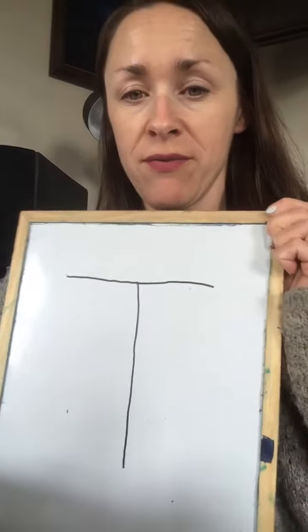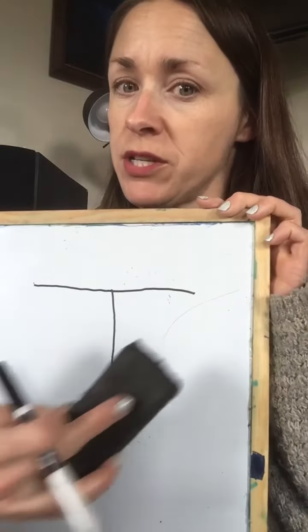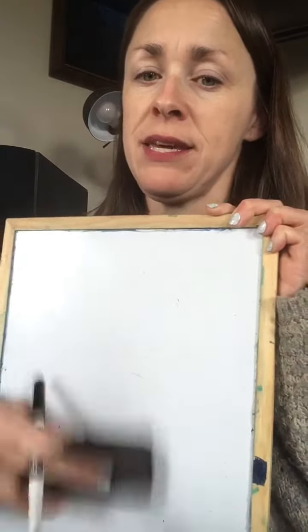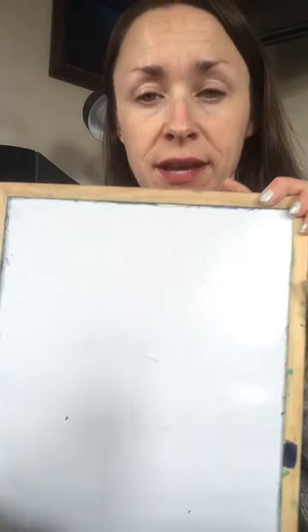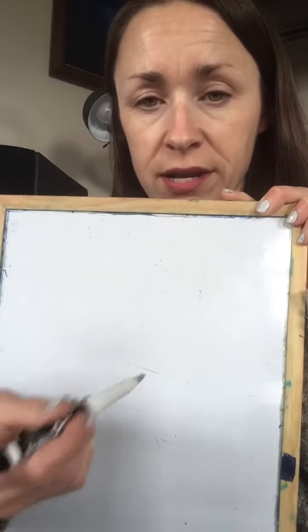Alright, if those were okay for you, I want you to try one more thing and this is where it gets tricky. Okay, goodbye T! A plus sign. Ok, so that's one line down and one across.